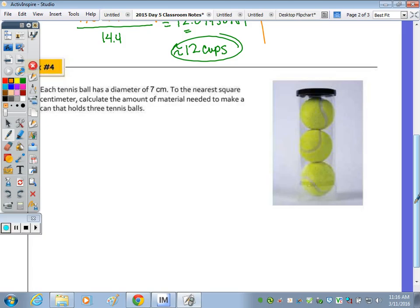In number four, it says each tennis ball has a diameter of seven centimeters to the nearest square centimeter. Calculate the amount of material needed to make the can that holds the three balls. Holding the balls, you think the amount of space within the canister is volume, but we're actually calculating to the nearest square centimeter, they give us a hint, the surface area. So we're designing the canister that's going to hold the three tennis balls. If each tennis ball has a diameter of seven, the radius would be 3.5. The total height of the cylinder is 21 centimeters.